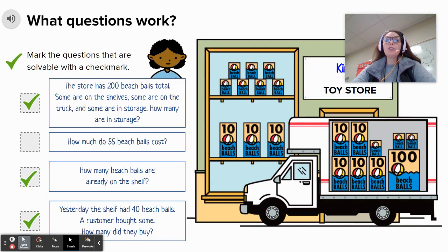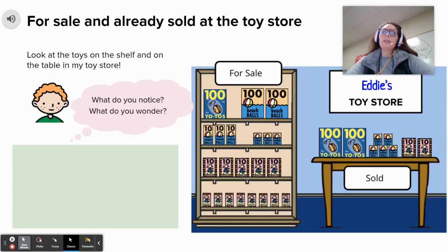Question number two was not solvable because we do not know how much a beach ball costs. Now let's look at this next picture. This has a picture showing the items that are for sale on the shelf, and the items on the table are listed as already sold. What do you notice and what do you wonder about the items in this picture?